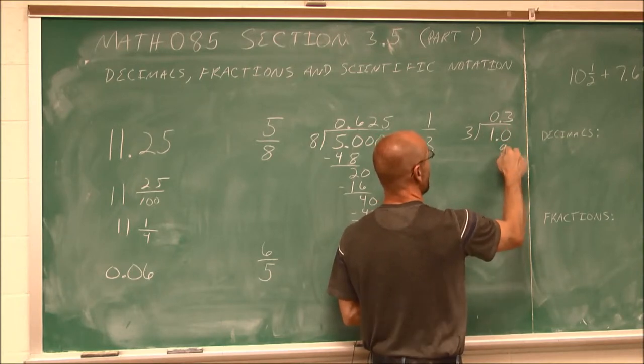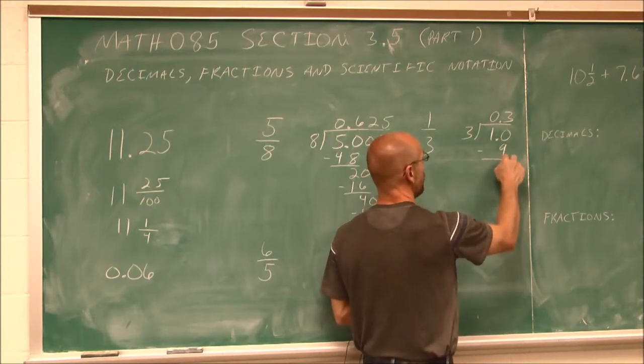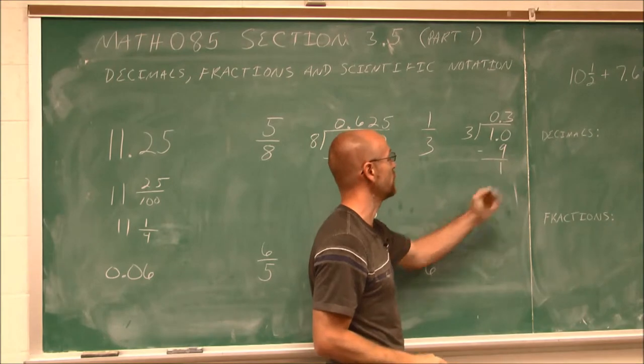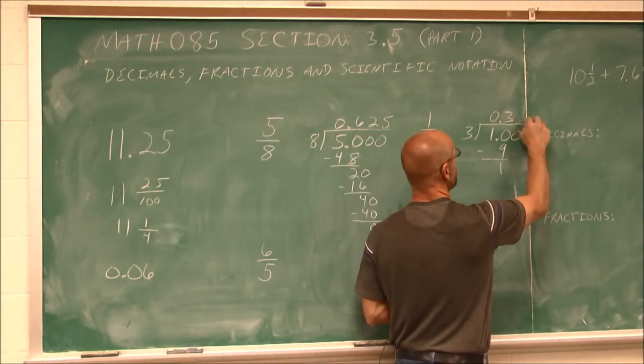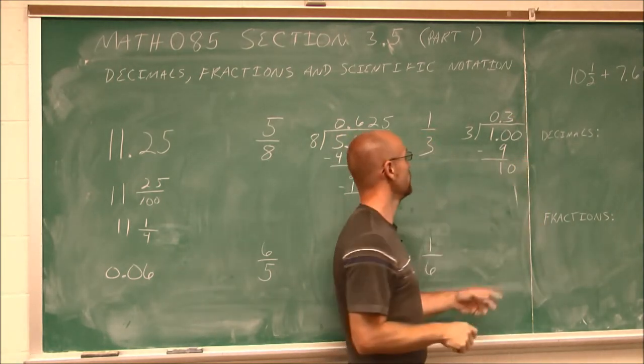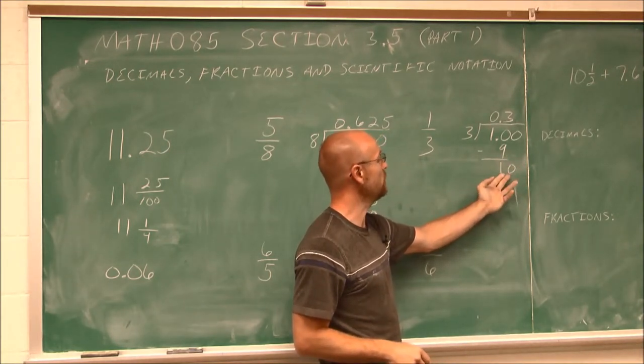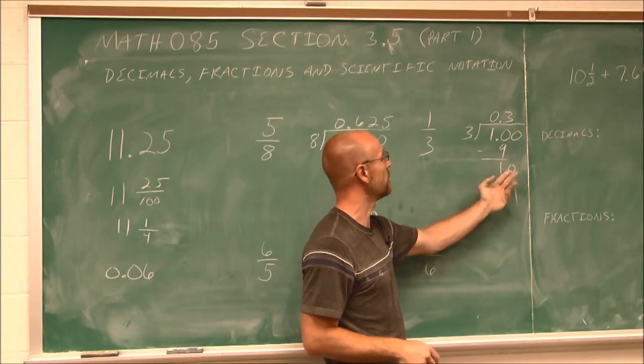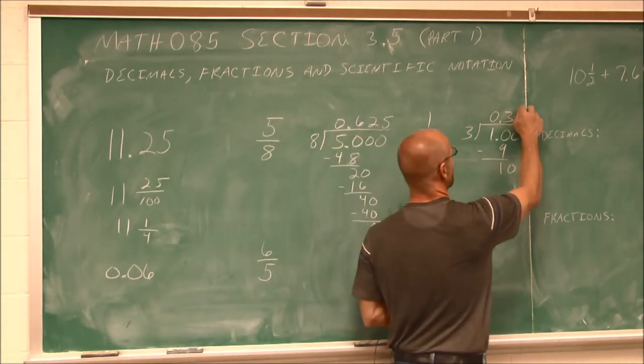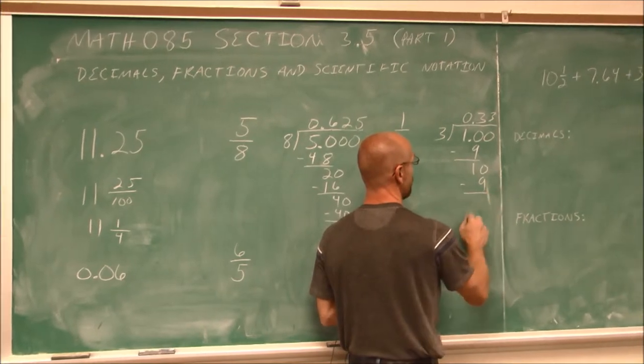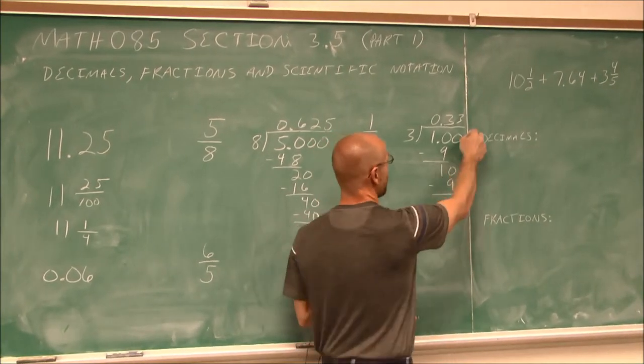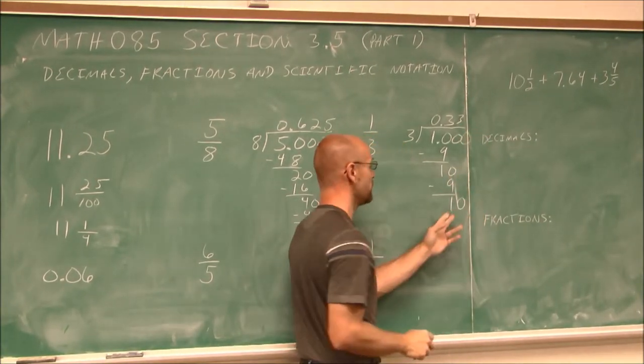3 goes into 10 three times. 3 times 3 would be 9. If I find that difference, I would get 1. Add another 0, bring down the digit. We have 10 again. If I do that division, it's going to be 3, which would give me 9. That difference is 1. If I bring down another 0, I get 10 again.